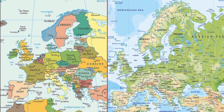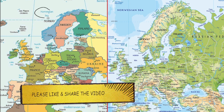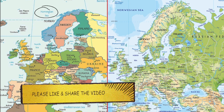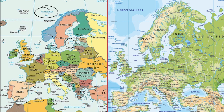Now let us look at some surrounding water bodies. First you need to notice the Norwegian Sea, then the Baltic Sea, then the North Sea, then the Celtic Sea, then the Mediterranean Sea, and finally the Black Sea.